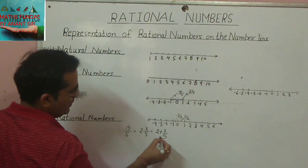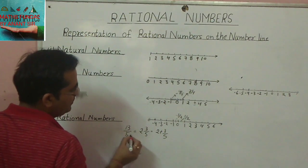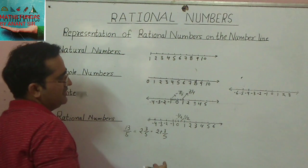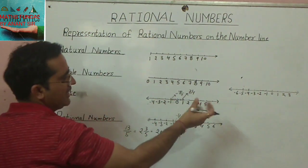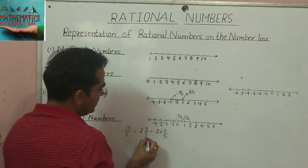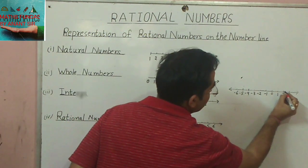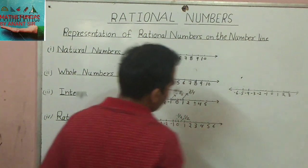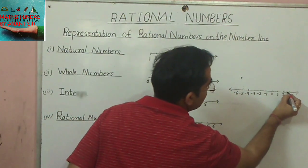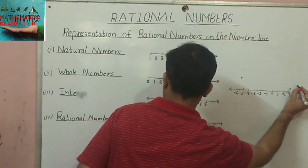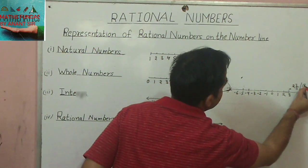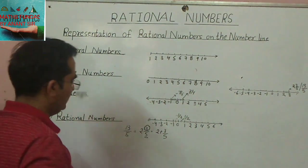Since 3 upon 5 is less than 1, the value 2 plus 3 upon 5 lies between 2 and 3. We take the segment between 2 and 3 and divide it into 5 equal parts (denominator is 5). The numerator is 3 and positive, so we count 3 parts to the right. That point represents 2 whole 3 upon 5, or 13 upon 5.